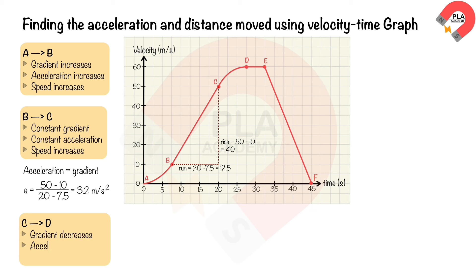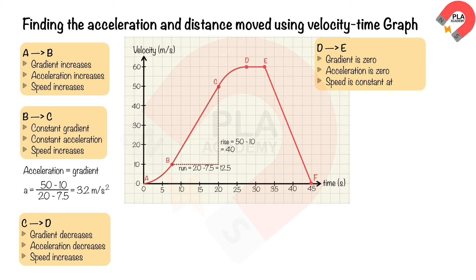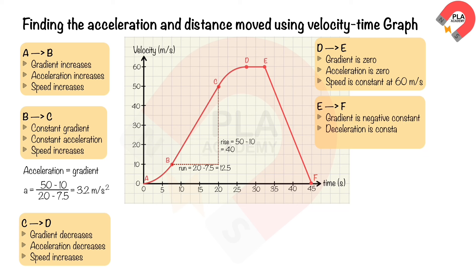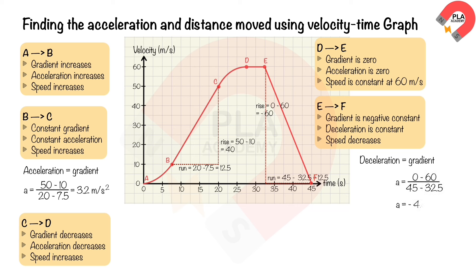Between C and D, the gradient is decreasing so acceleration decreases but speed still increases. Between D and E, the gradient is zero, so no acceleration and speed is constant at 60 m/s. Between E and F, the gradient is negative and constant, so deceleration is constant and speed decreases. The deceleration: change in y = 0 − 60 = −60, change in x = 45 − 32.5 = 12.5. Deceleration = −60 / 12.5 = −4.8 m/s².